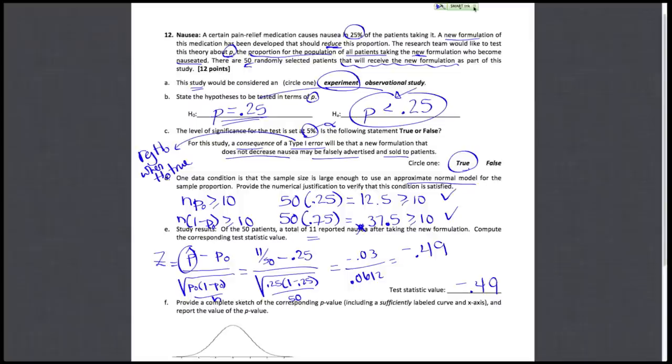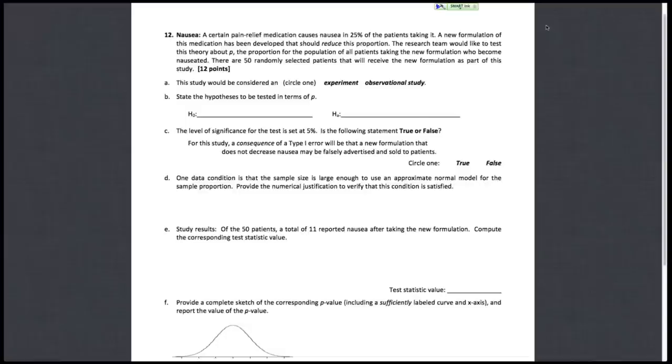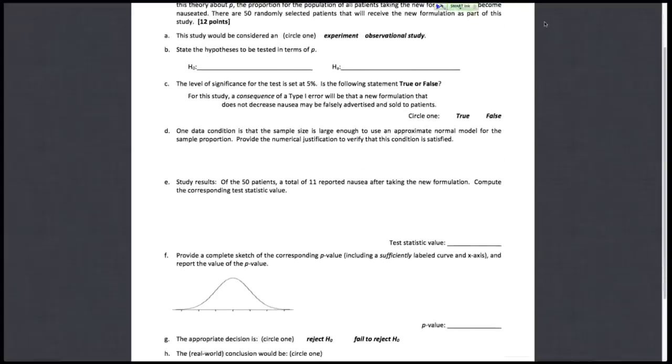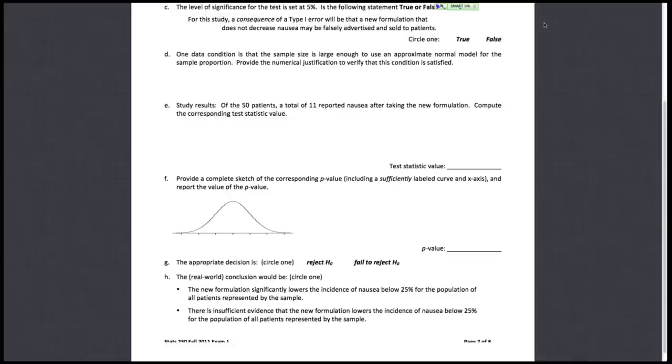Using our test statistic of negative 0.49, let's continue to find our p-value so we can make our decision and write out a conclusion. We're asked to provide a complete sketch of the p-value, labeling the curve, the axes, and reporting that actual value. It's a large sample z-test. Our p-value should show us a probability of getting our test statistic z as extreme or more extreme than the one we got, and the one we got here is negative 0.49.